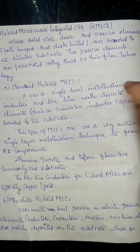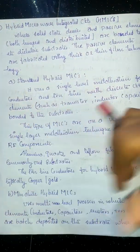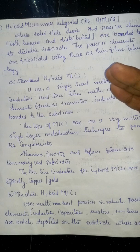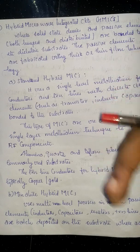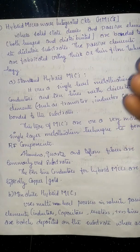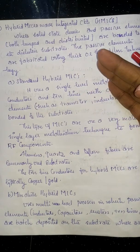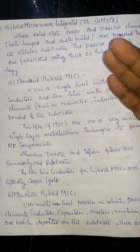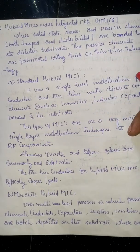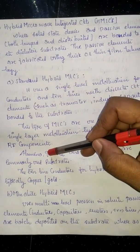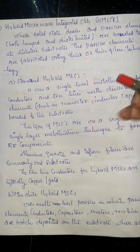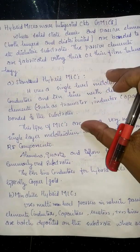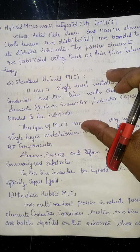Standard hybrid MICs are used in RF components within microwave networks where high frequency signals are used. The standard hybrid MICs use single layer metallization. Alumina substrates and Teflon fibers are commonly used as the dielectric substrate in standard hybrid MICs.